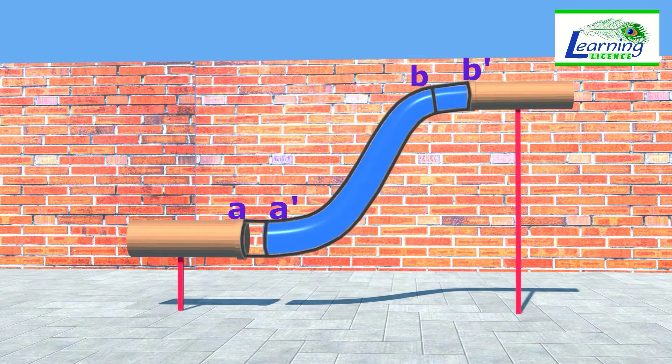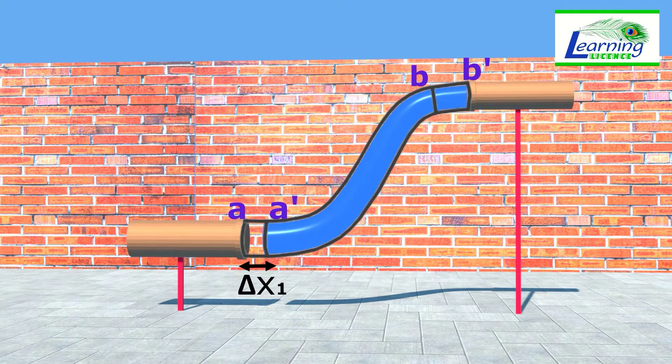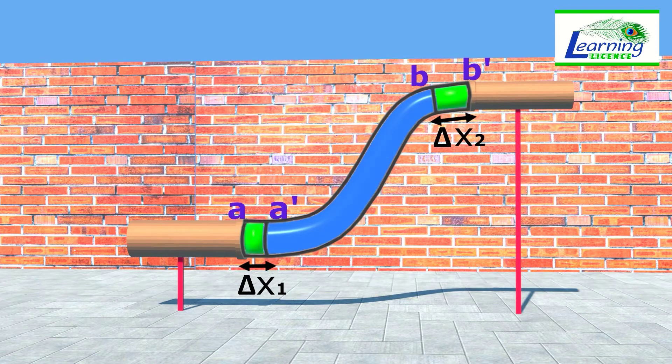From its initial position, the A end of fluid moves a distance del X1, and the B end of the fluid moves a distance del X2.